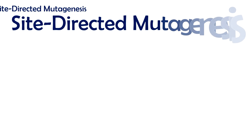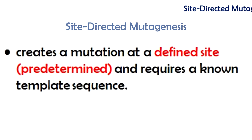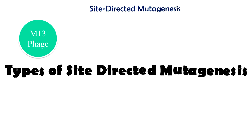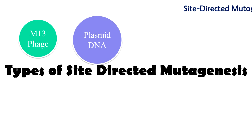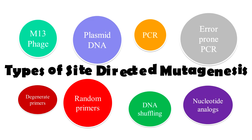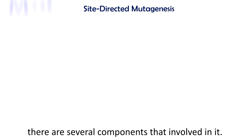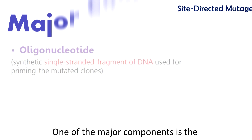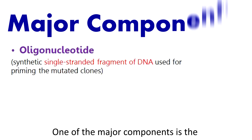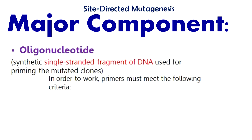Site-directed mutagenesis is defined as a mutation created at a defined site, and it requires a known template sequence. There are several types of site-directed mutagenesis, but we are focusing on M13-based mutagenesis, plasmid DNA mutagenesis, PCR mutagenesis, error-prone PCR mutagenesis, and nucleotide analog mutagenesis. One of the major components involved is the oligonucleotide — a synthetic single-stranded fragment of DNA used for priming the mutated clones.